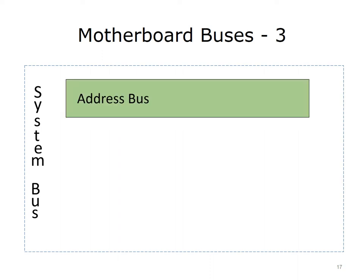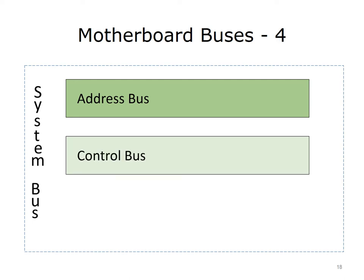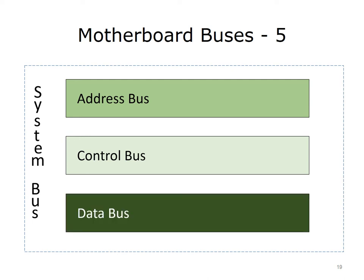The first is the address bus, which is where the destination address is placed for a specific electronic communication. The second is the control bus, where timing and specific commands are placed. Finally, the data bus is where the actual data is placed. For example, documents sent to the printer travel along the data bus.